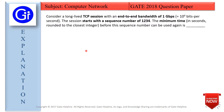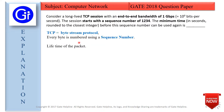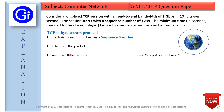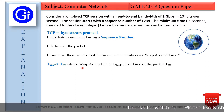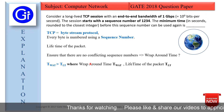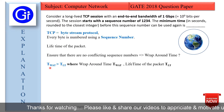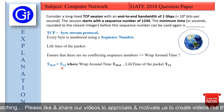TCP is a byte stream protocol and every byte is numbered using a sequence number. Every packet can loop around the internet for some period of time, which is the lifetime of the packet. Therefore, to ensure that there are no conflicting sequence numbers, we need to find the wraparound time of the sequence number, after which the number is used again. This wraparound time should be greater than the lifetime of the packet — that is, T_WAT must be greater than T_LT.